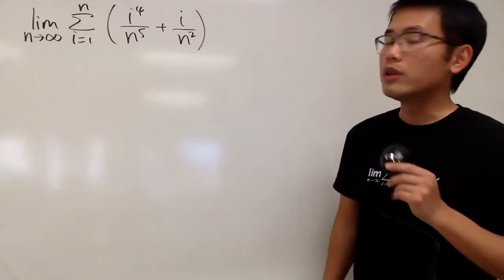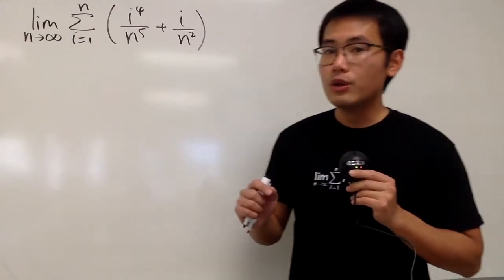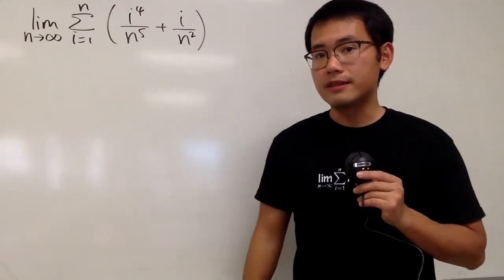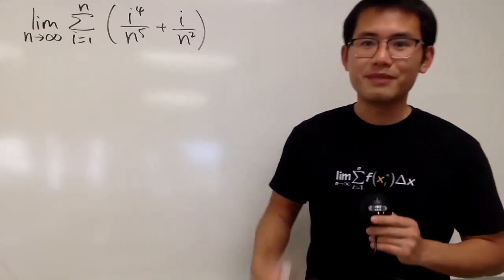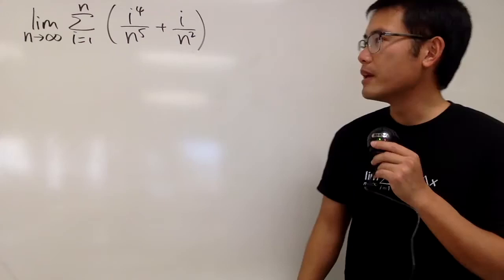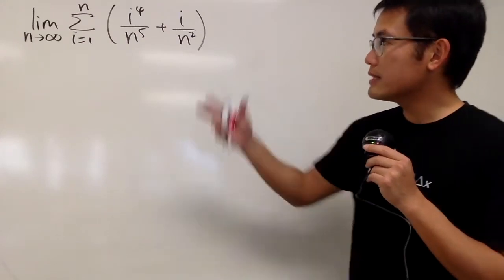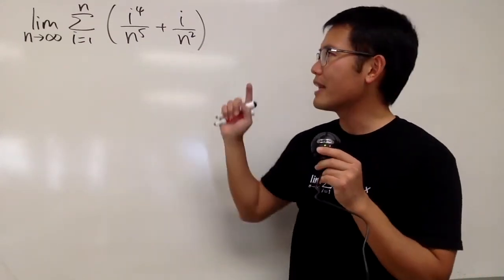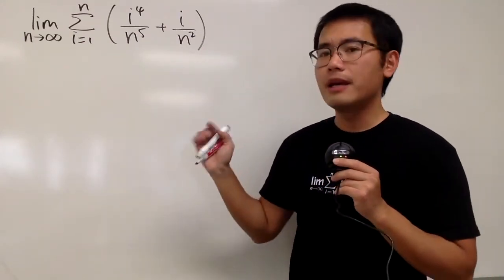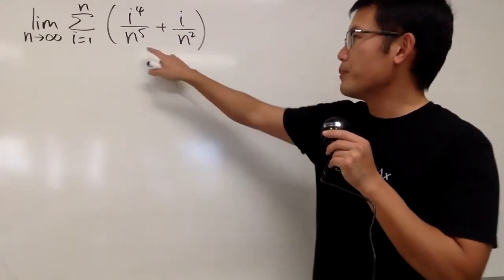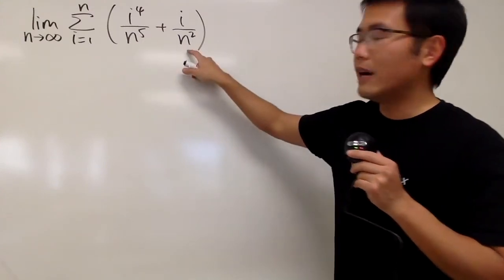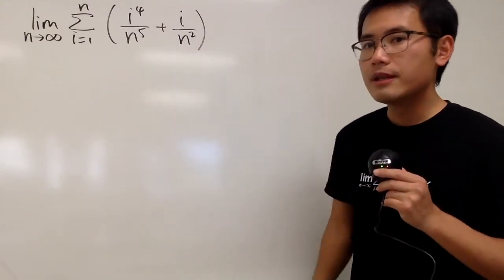To do this kind of equation, we should first look for the Δx part. And usually that's a number over n, but we don't have that yet. It's okay though, because here we have n to the fifth, and here we have n to the second.